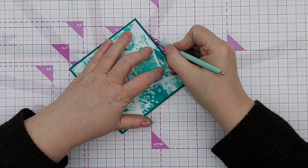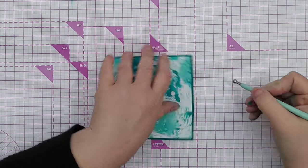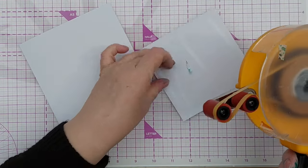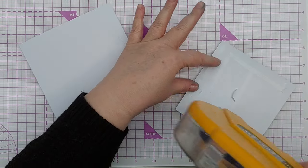I then used tape runner to attach this panel to the front of my card. You might notice looking at this that there isn't a lot of white space. For a lot of people, having lots of white space is what makes a clean and simple card clean and simple.